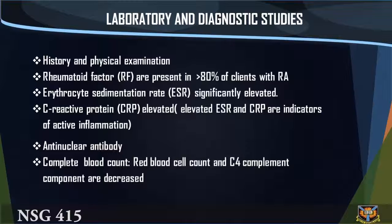(4) C-reactive protein (CRP) — elevated. Elevated ESR and CRP are indicators of active inflammation. (5) Antinuclear antibody. (6) Complete blood count — red blood cell count and C4 complement components are decreased.